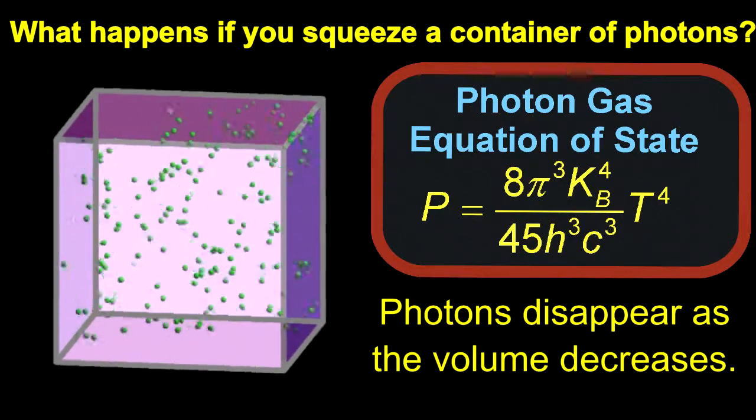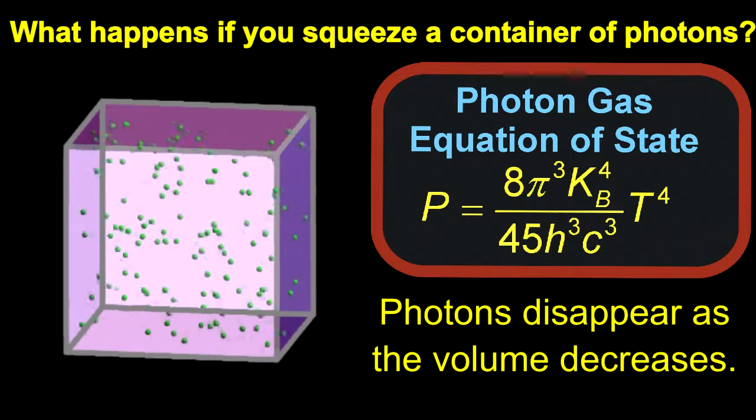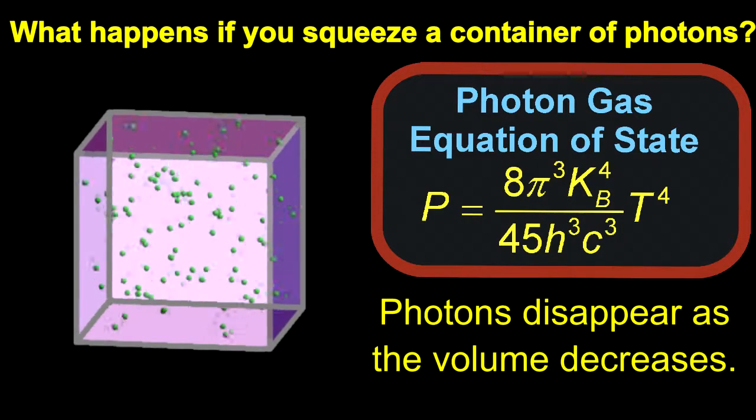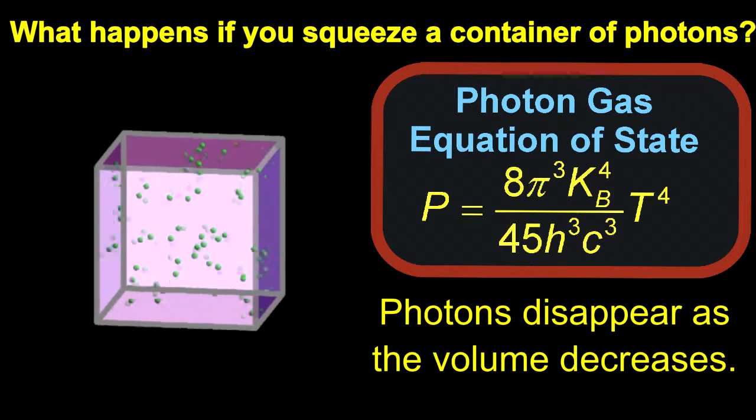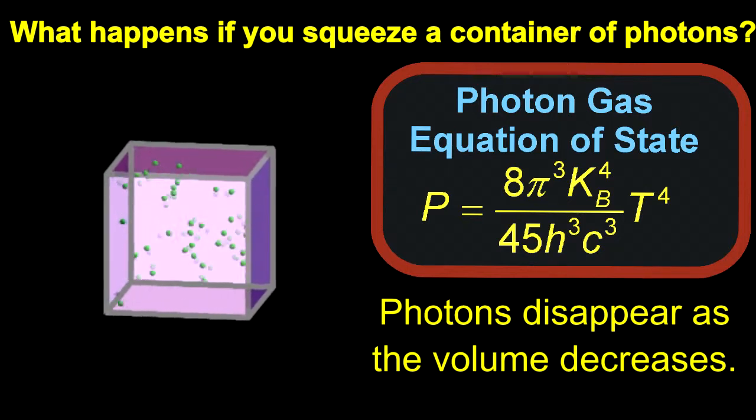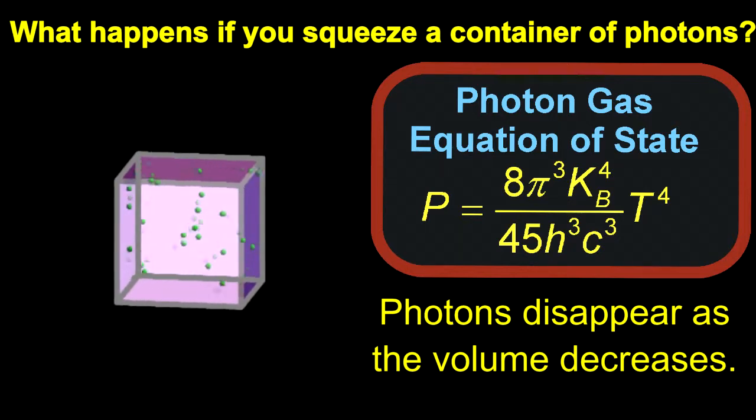When a photon gas is compressed the rubber does not stretch because the number of photons immediately shrinks by exactly the right amount to compensate for the reduced volume. This is another way that photons don't behave like atoms.